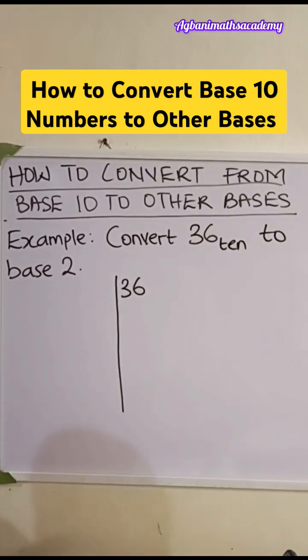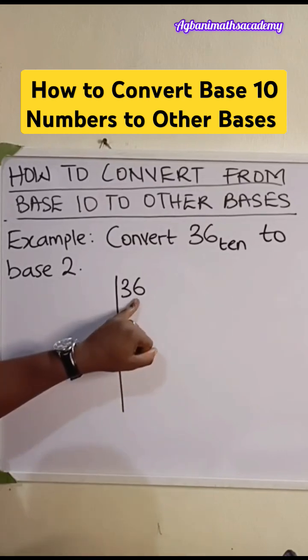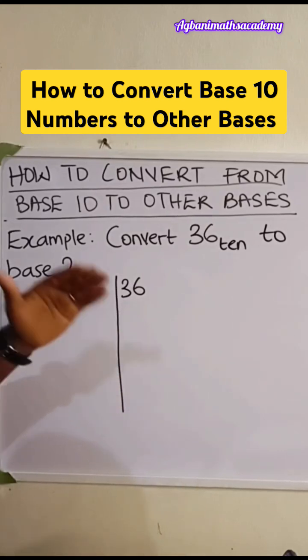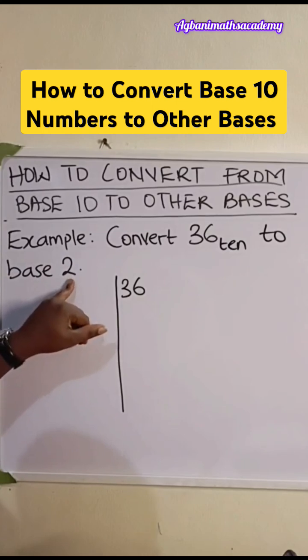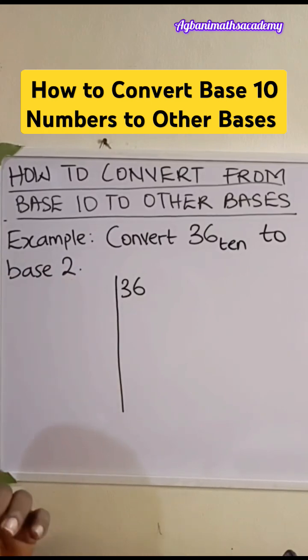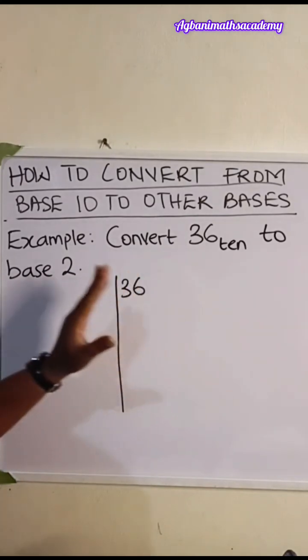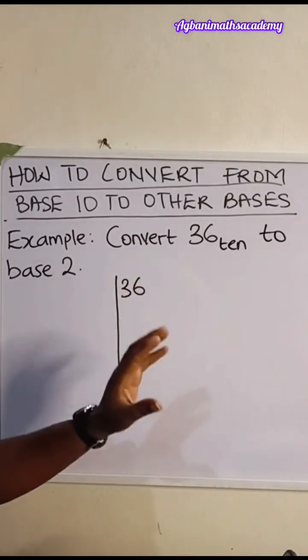From the instruction we wrote down earlier, we're expected to break down the number in base 10 by the new base we are converting to, which is base 2, until we have 0. We have to take note of the remainder. Whenever we divide it, we need to write down the remainder.